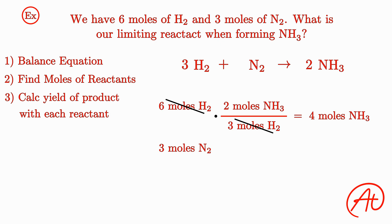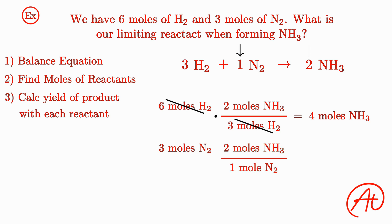Now let's do the same process for nitrogen. We know that we are starting with 3 moles of nitrogen, and from our equation, to make 2 ammonias we only need 1 diatomic nitrogen. Multiplying across, we have our moles of nitrogen cancel out, and we find that if we were to completely use all 3 moles of nitrogen, we could make 6 moles of ammonia.